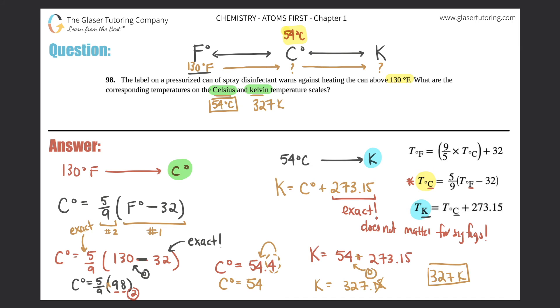327 Kelvin - I'll box this off. So those are your two answers: 130°F is 54°C and 327 K. These are all the same temperature, just on different scales.